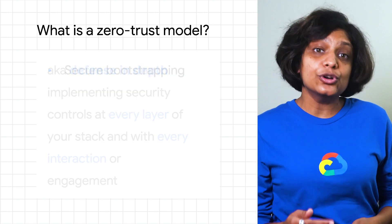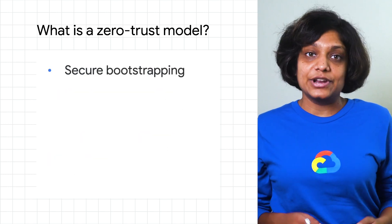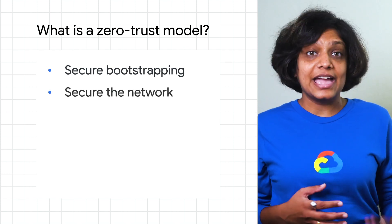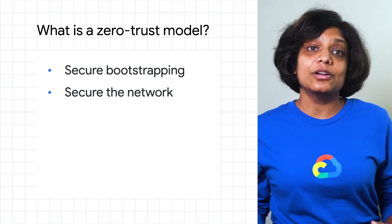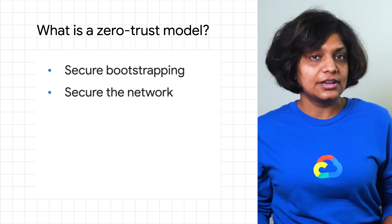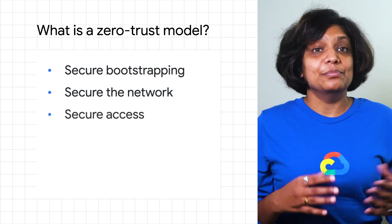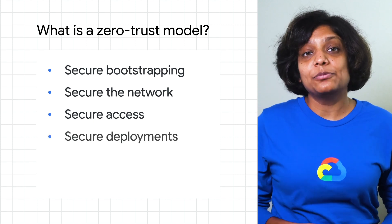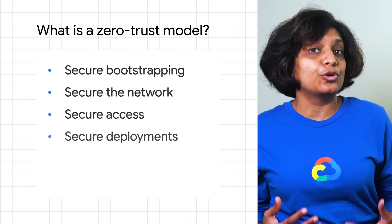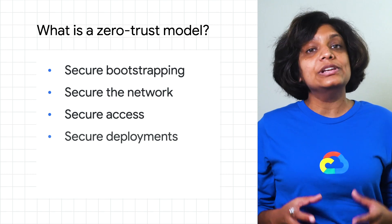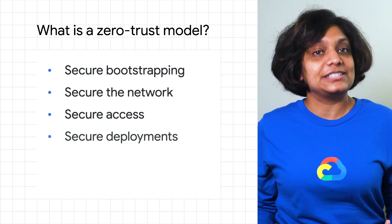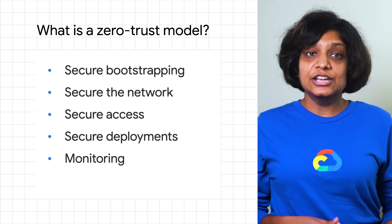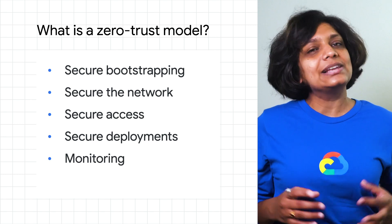This means you start with secure bootstrapping at every node and in every cluster. Next, you secure the network not just at the perimeter and the edge, but by effectively segmenting your deployment and securing the network for each service. Then you secure access — be it your infrastructure, your application, or the underlying data. You also secure your deployments and rollouts by making sure both your code and your configuration are only rolled out when trusted and validated. And finally, you need better observability to enforce compliance and quickly spot threats, because you can't protect against what you cannot see.